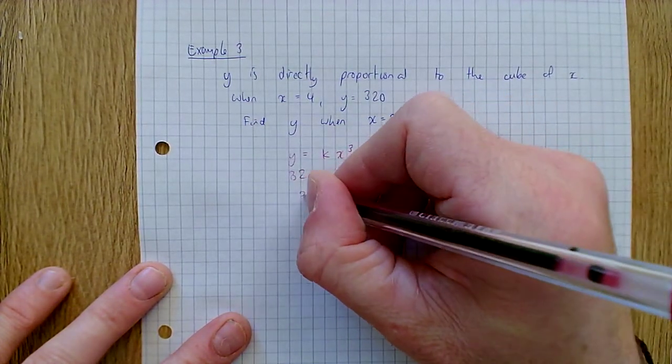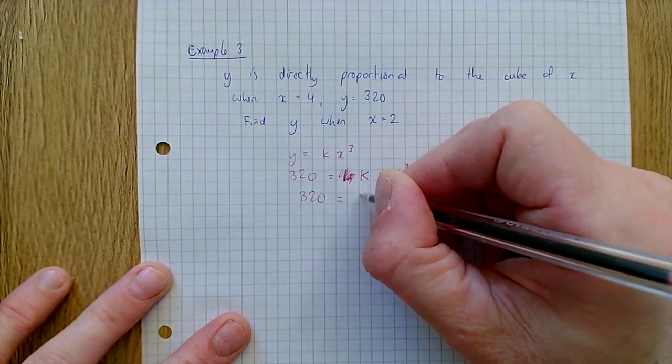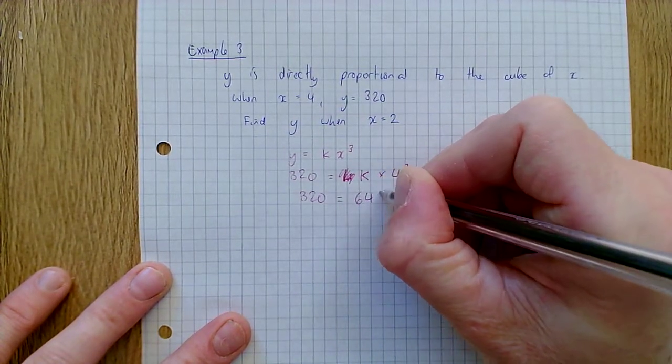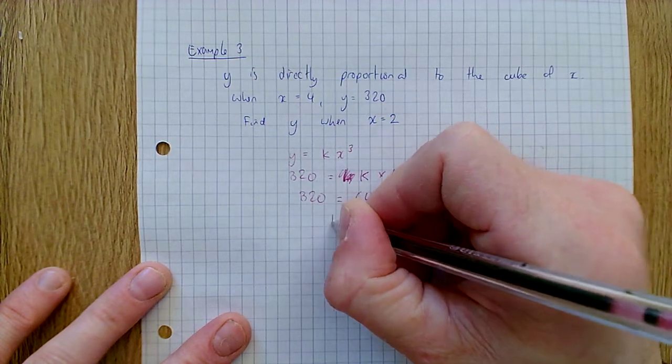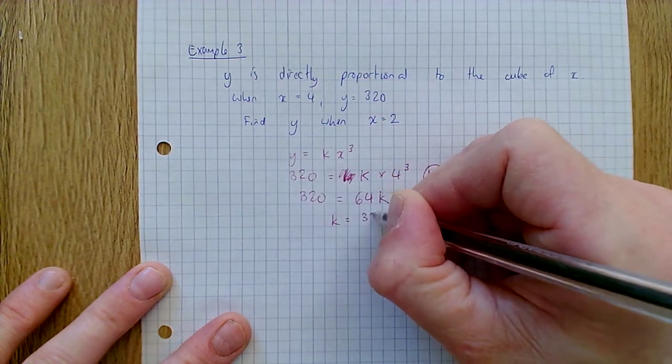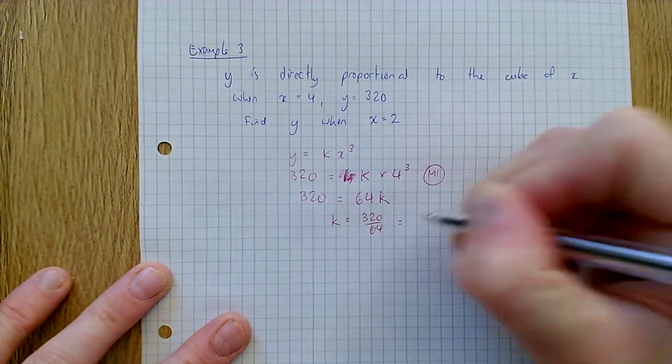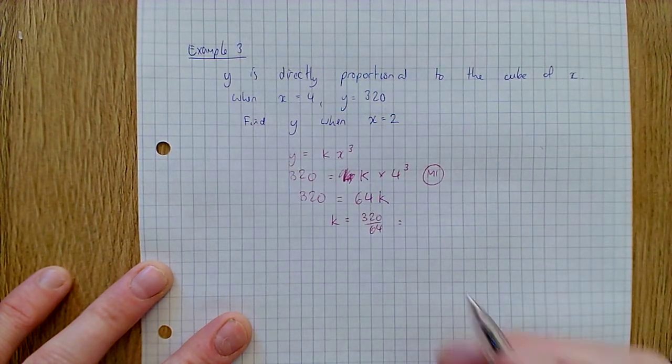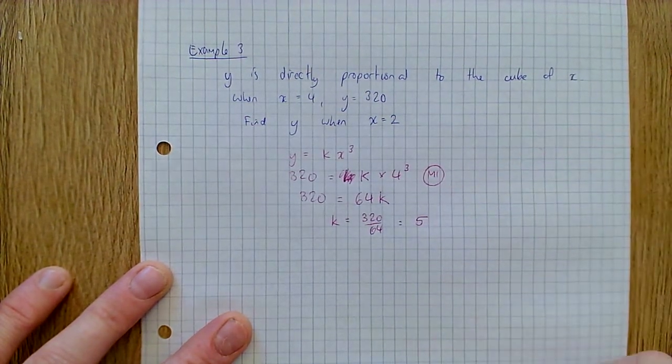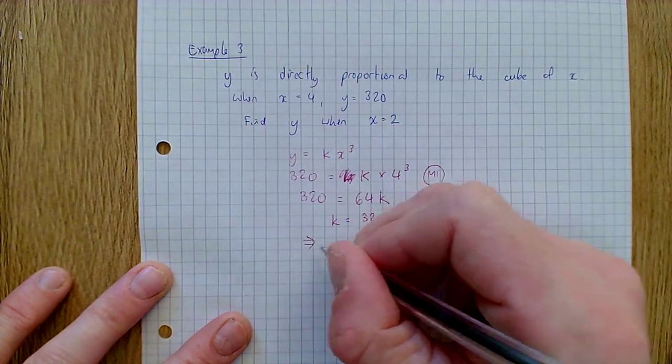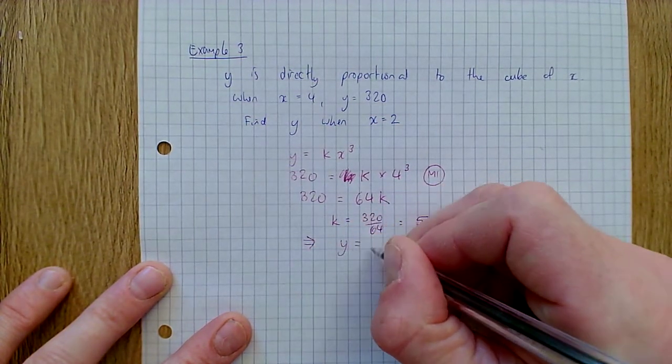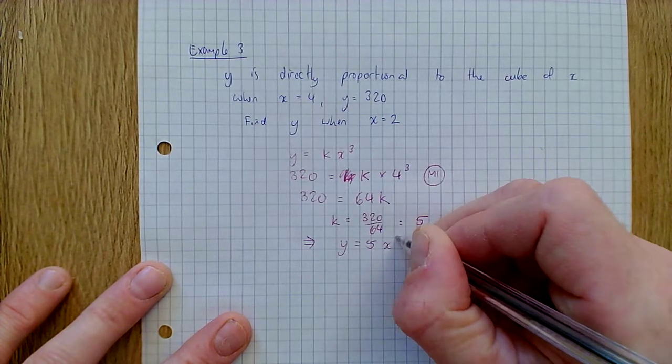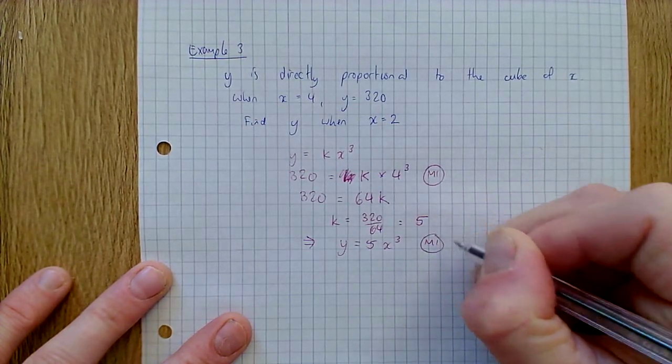Okay, so 320, four cubed is 64, so 64k. And then k equals 320 over 64 which equals five. So then we can conclude that y equals five x cubed. That's going to get us a method mark, or maybe the method mark will be for getting five.